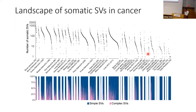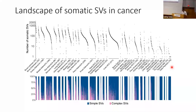Before talking about what we actually did, I want to give you an overview of the 1000-mile-high landscape of somatic SVs in cancer — what you would expect if you sequence a lot of cancer genomes. In this plot, every dot is a tumor grouped by tumor type. On the left side, sarcoma, ovarian cancer, and breast cancer tend to have very unstable genomes with lots of SVs. On the other side, blood cancers and pediatric cancers tend to have quieter genomes. But in every tumor type, there's a three-order-of-magnitude difference — some tumors have fewer than 10 SVs, and some have up to 1,000.